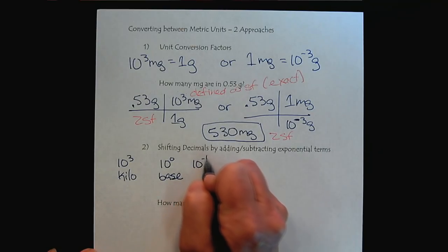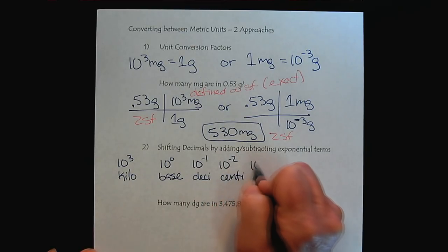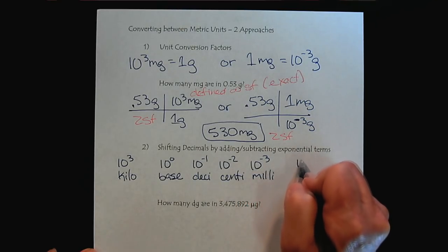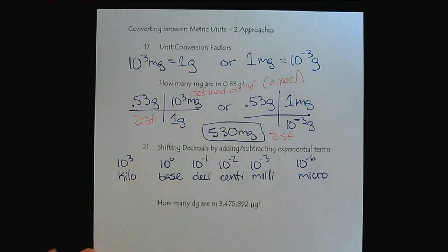Ten to the minus one is deci. Ten to the minus two, centi. Ten to the minus three, milli. And then we'll jump up to ten to the minus six is micro.